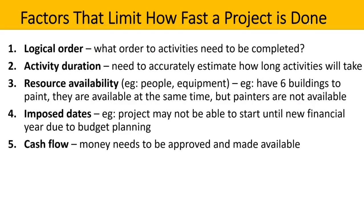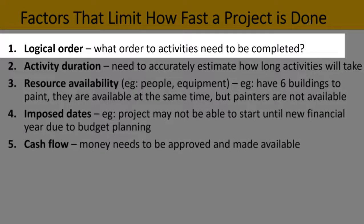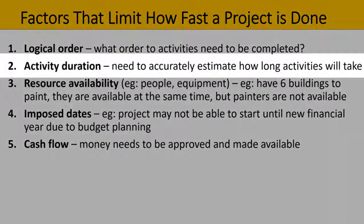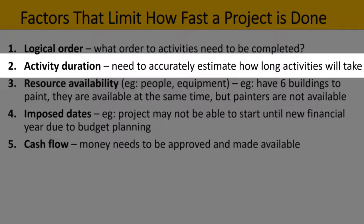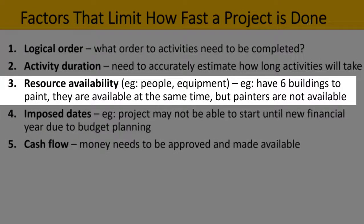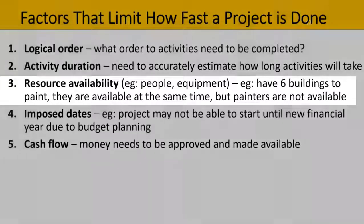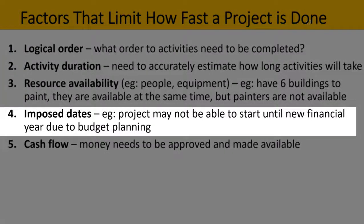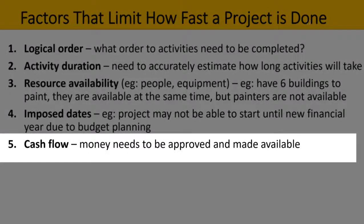Finally, here are some factors that can limit how fast a project can be done. First is the logical order — what order do activities need to be completed in, and there may or may not be flexibility. Second is the activity duration: you need to accurately estimate how long activities will take, and if your estimations are poor, this could affect the length of your project. Third is resource availability — the people and equipment. For example, you might have six buildings to paint all available at the same time, but the painters aren't. The fourth is imposed dates — for example, the project may not be able to start until the new financial year due to budget planning. And the fifth is cash flow: money needs to be approved and made available, and constraints with cash flow can also impact how quickly your project can be completed.